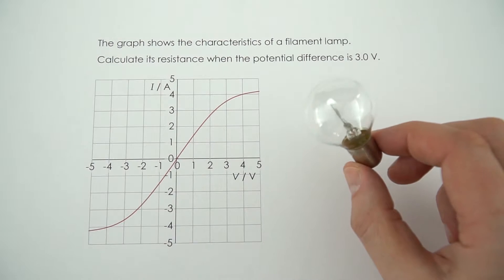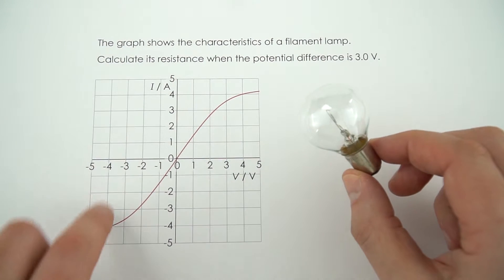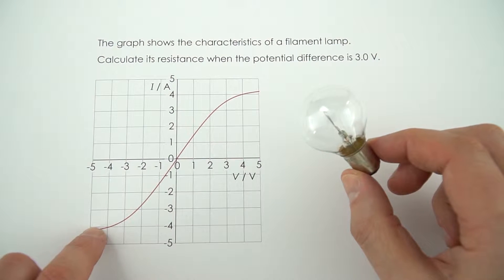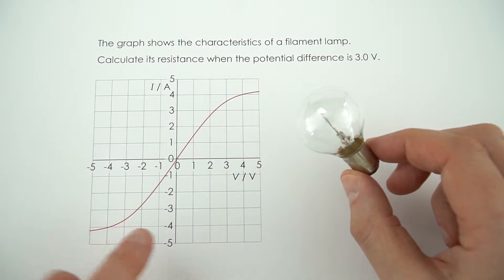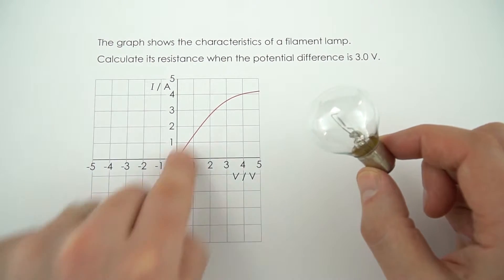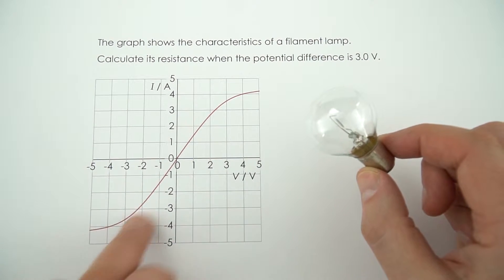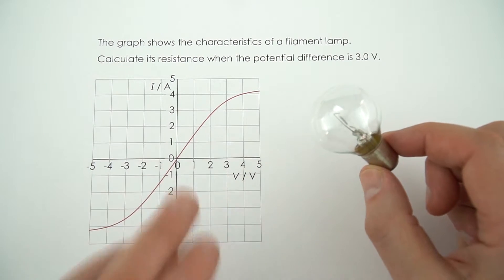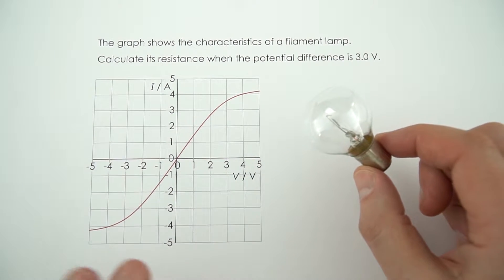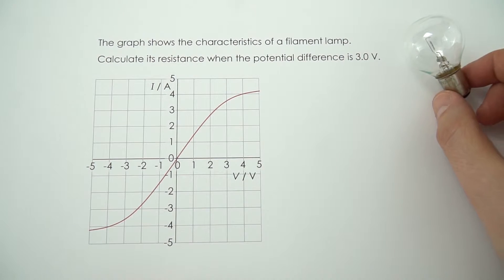In this example we had a filament lamp, and as the values of current and potential difference across it were changed, we got this graph. This means that its resistance doesn't stay the same — it actually changes as the lamp gets hotter.